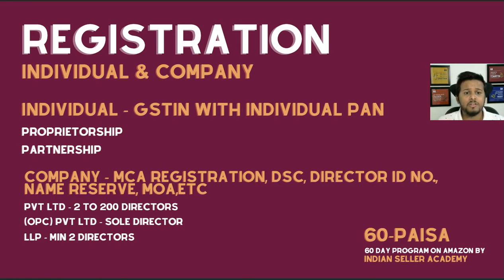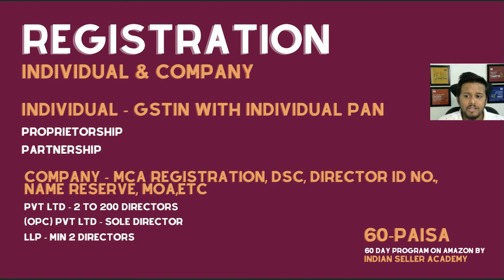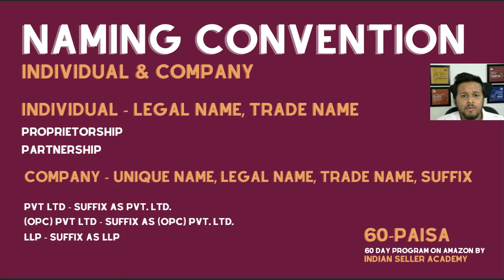For private limited companies, you can have a minimum of two directors and a maximum of 200. For OPC (one person company), you yourself can be the sole director. For LLP, there is a minimum of two directors but no upper limit of 200 as in private limited.